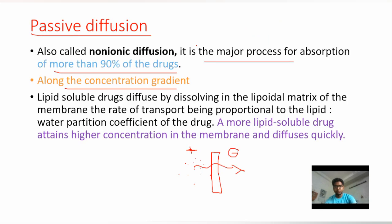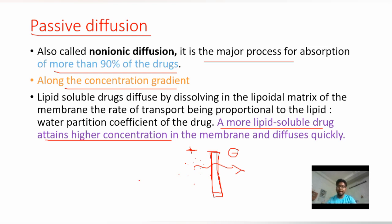For a drug to pass through the cell membrane via passive diffusion, it must have some lipophilicity. The more lipophilic the drug molecule is, the easier it is for it to cross the cell membrane.